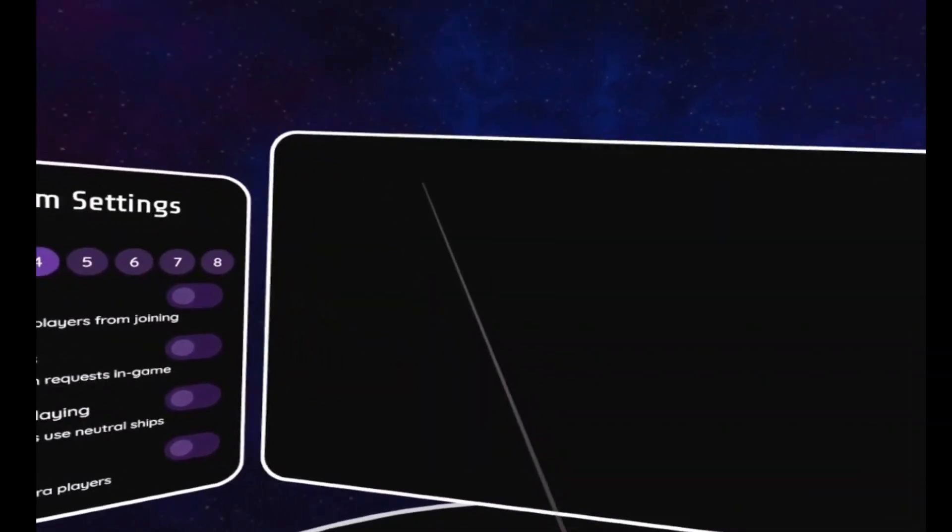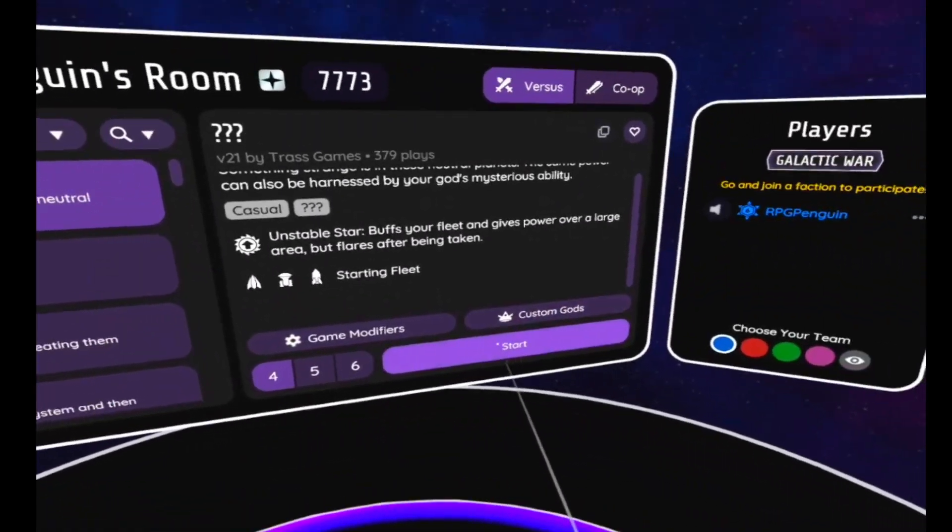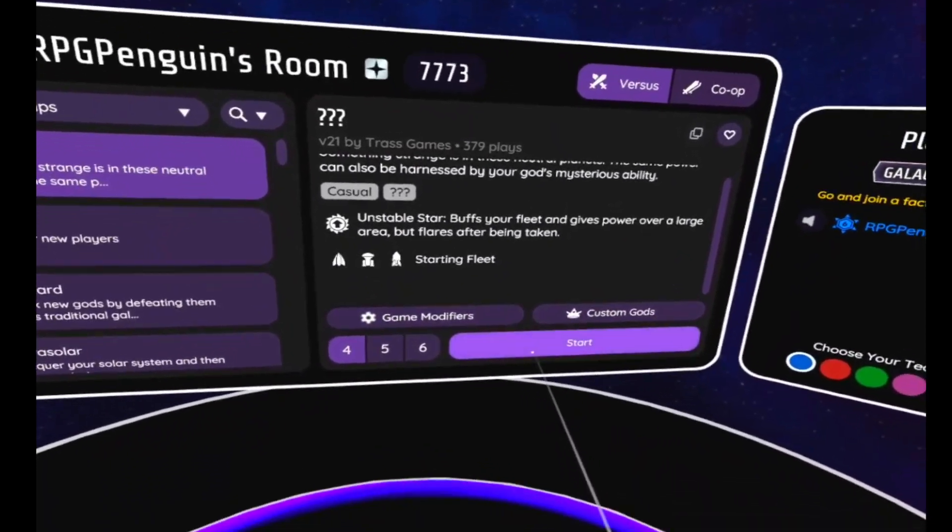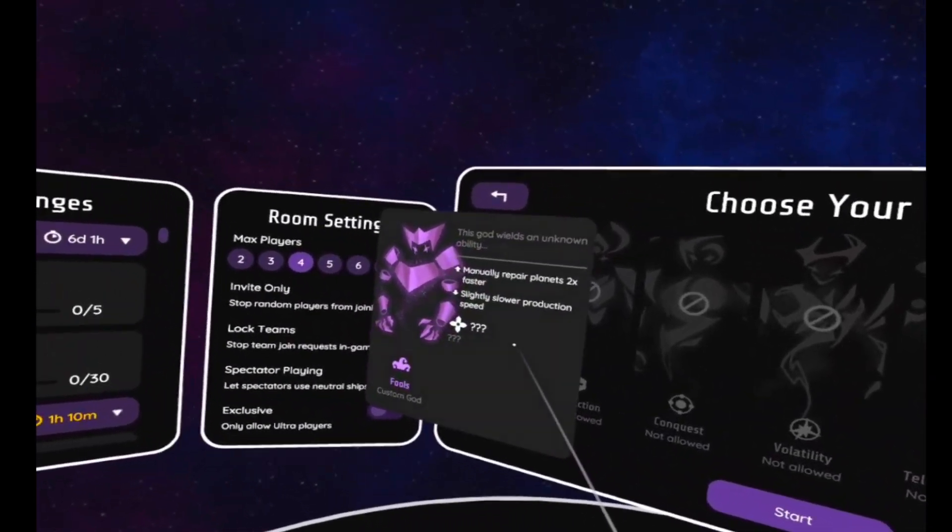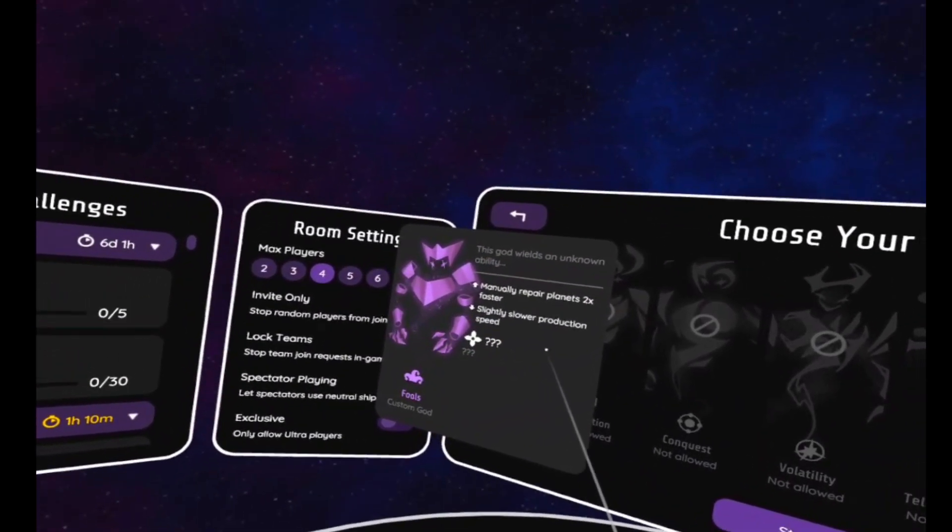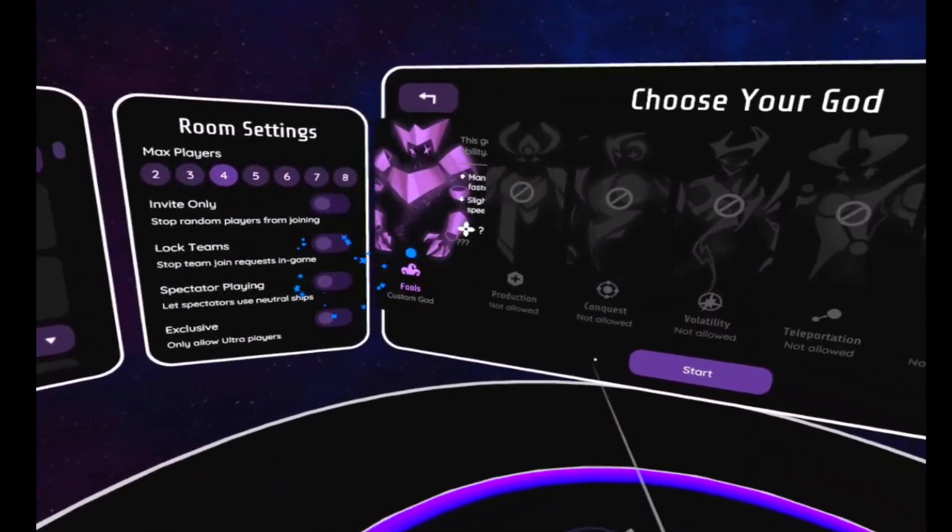So even if we don't want to use the map, which should be, oh, it's right there. If you don't want to use that map, we can try and do it in a different way. Alright, fool. Manually repair planets two times faster, slightly slower production speed, and huh?